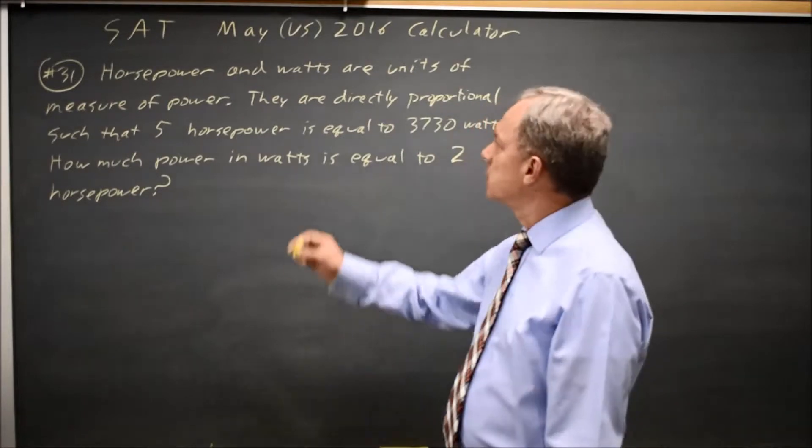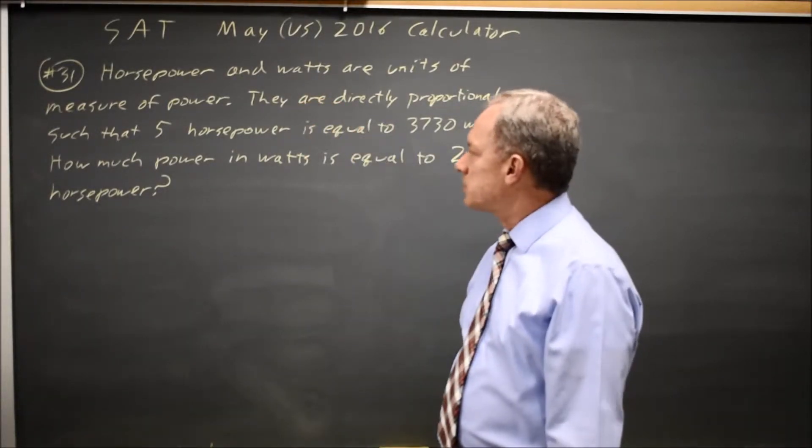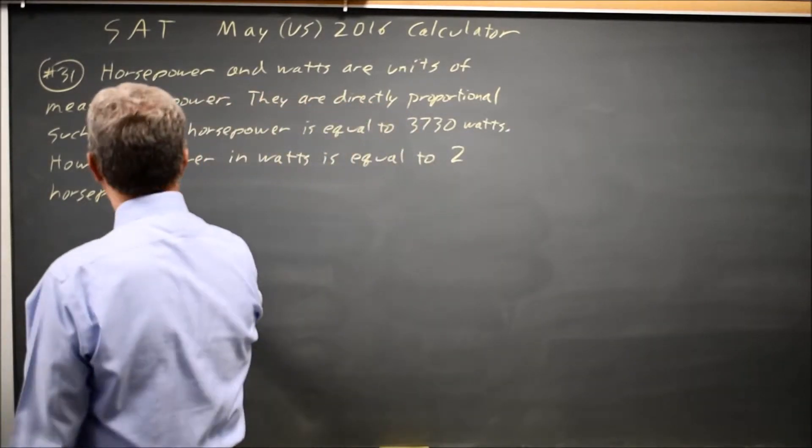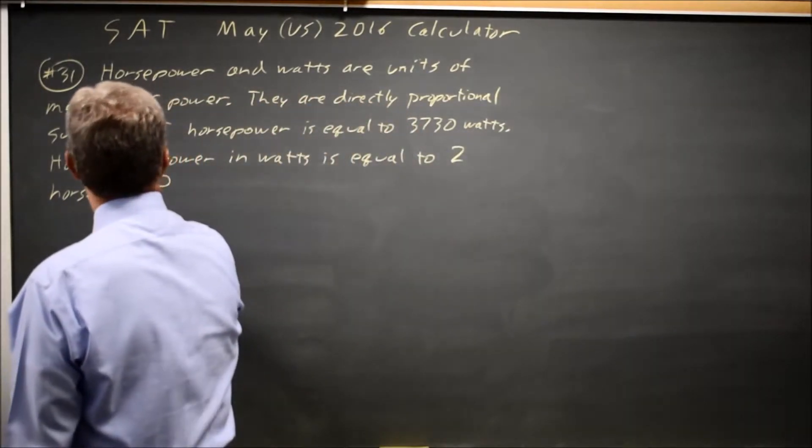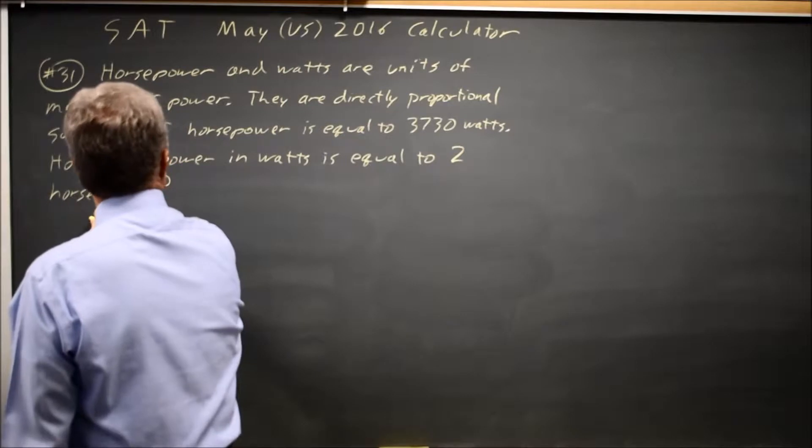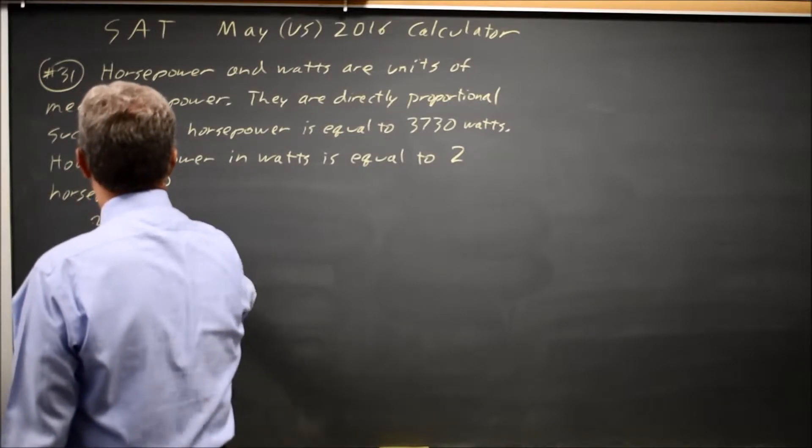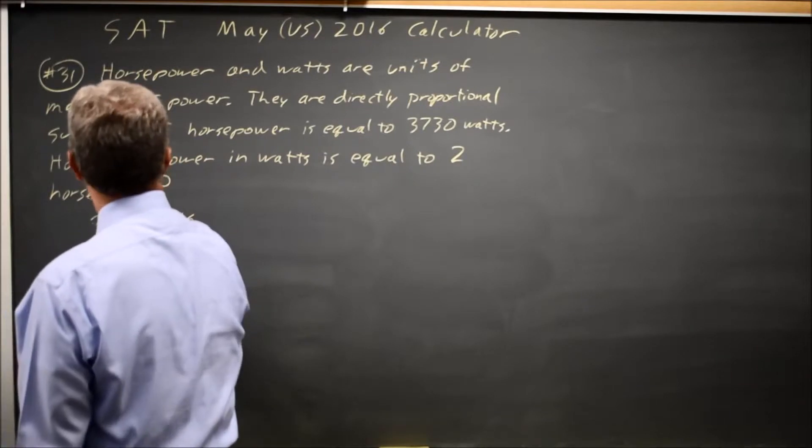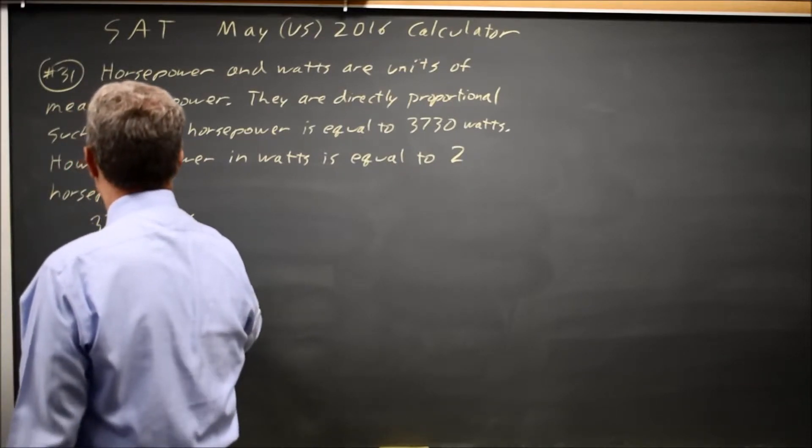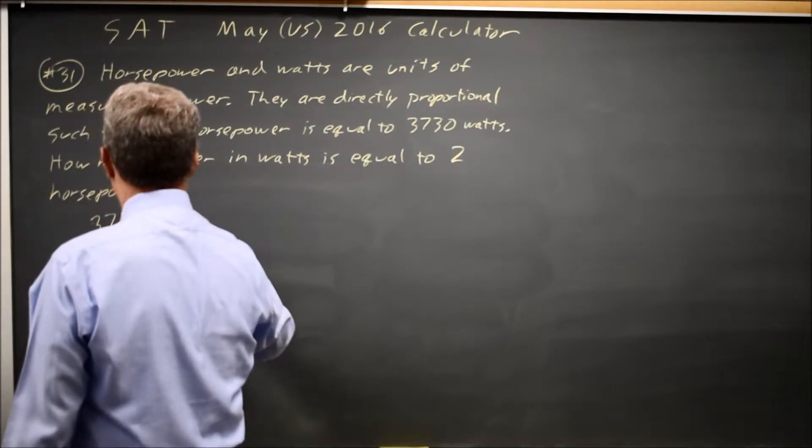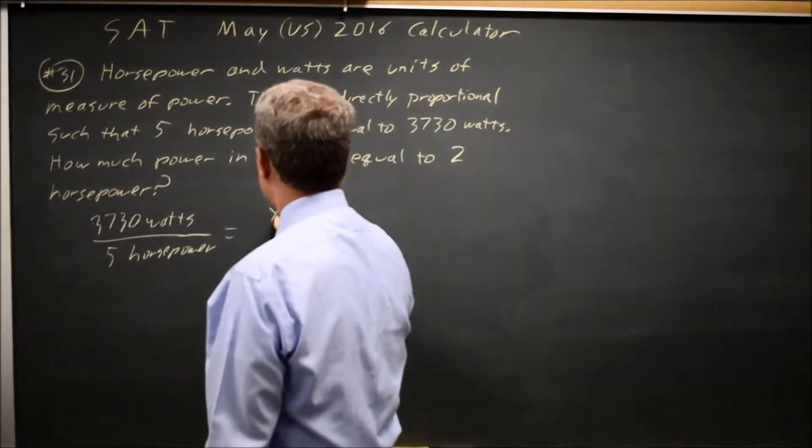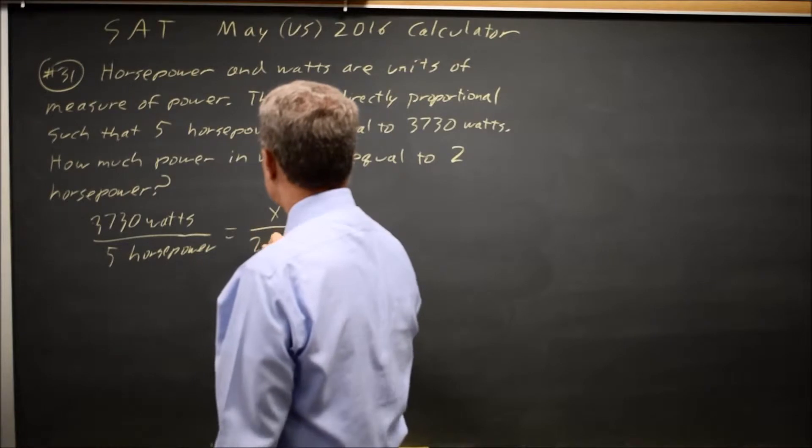College Board gives us a proportion for horsepower and watts, and there are two ways of setting this up that I like to look at. One is the proportion 3730 watts over 5 horsepower equals the number of watts we're looking for, x watts, over 2 horsepower.